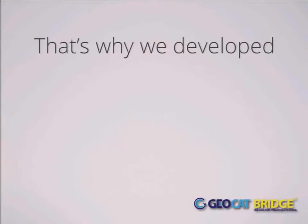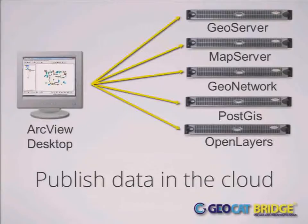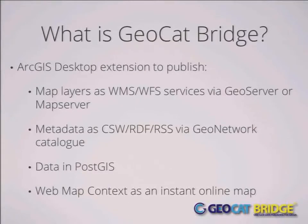That's why we developed GeoCat Bridge — it gives interoperability for all. You have ArcGIS Desktop with your data and metadata stored locally. You hit a button and it publishes to GeoServer or MapServer, GeoNetwork, PostGIS, OpenLayers — the full open-source stack. Map layers are published as WMS, WFS, and WMTS. Metadata is published as CSW, RDF, and RSS. The data goes into PostGIS, and the MXD is converted to an open Web Map Context format usable in OpenLayers instantly.